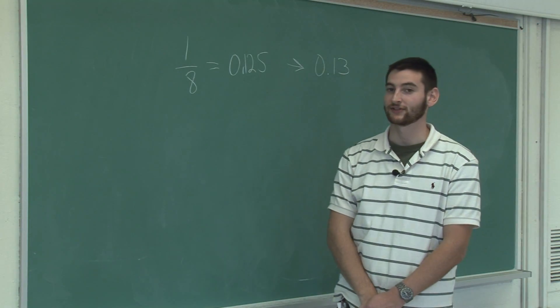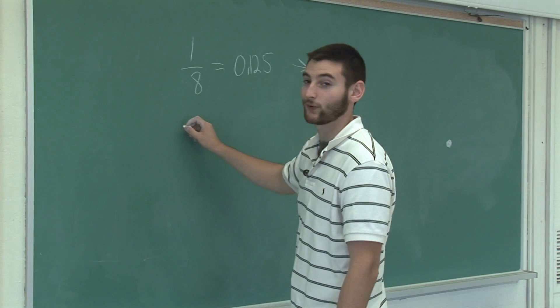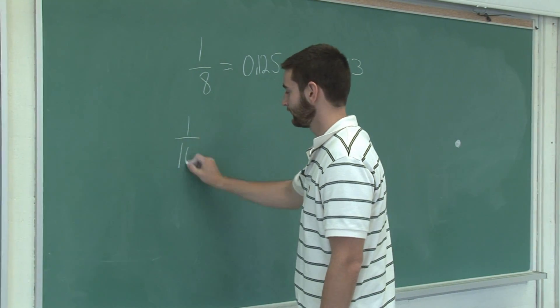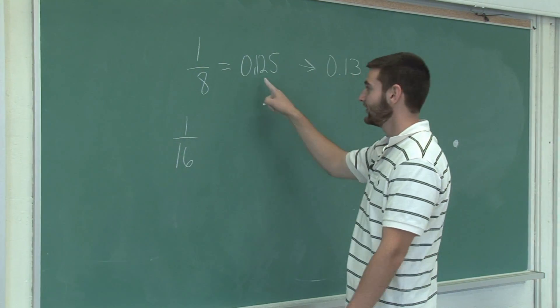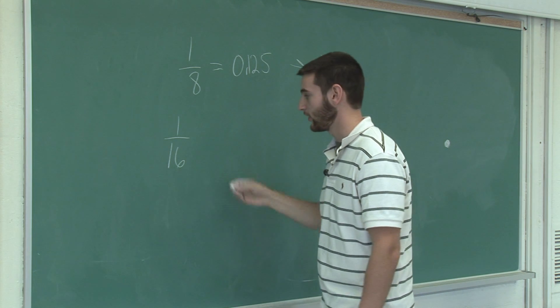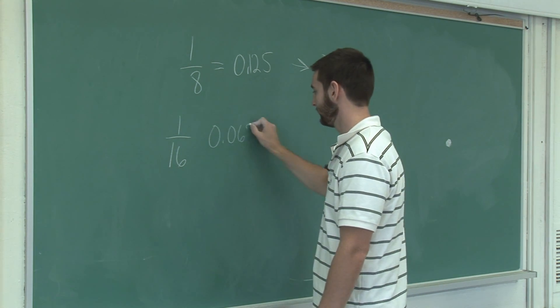Now let's round a fraction that's a little bit more complicated. Let's do 1 sixteenth. 1 sixteenth is half of 1 eighth, or 0.0625.